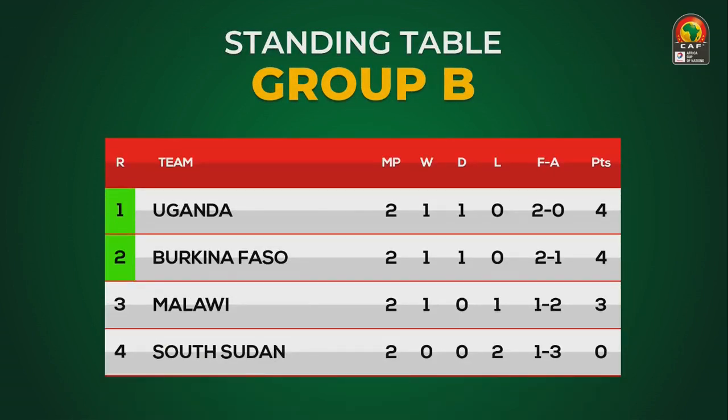In group B, the top of the table is Uganda, followed by Burkina Faso in second, Malawi and South Sudan below it.